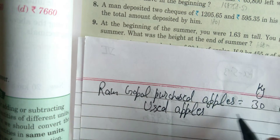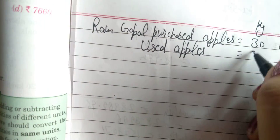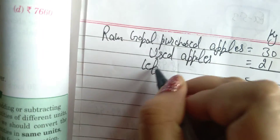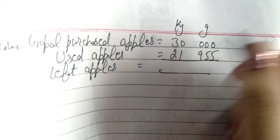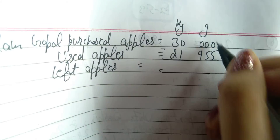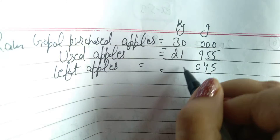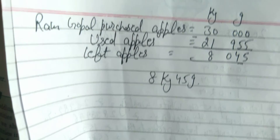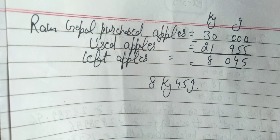अब used apples: 21 kg 955 gram को minus करना है। Left apples — कितने apples बचे — left के लिए हमेशा minus करते हैं। Kg के नीचे kg, gram के नीचे gram। Carry लेंगे: 10 - 5 = 5, 9 - 5 = 4, 9 - 9 = 0, 9 - 1 = 8। उसके पास 8 kg 45 gram apples बचे। Exercise 5.3 आपको complete करनी है अपनी copy में। Thank you।